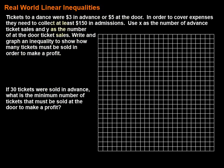We have X and Y. Each advance ticket is going to bring in $3, so for the advance ticket sales we're going to bring in 3X. For the at-the-door ticket sales we're going to bring in 5Y, because there are Y tickets being sold at the door and each of those brings in $5. The total of those two things — we'll add those together and compare that to $150. It says at least $150.